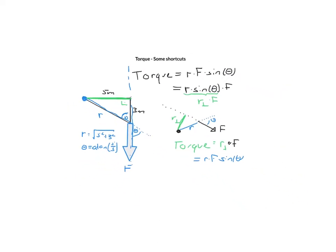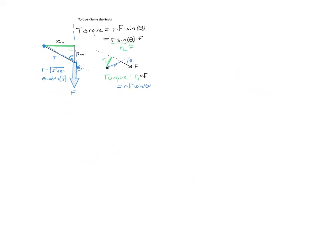Now, this is my first shortcut. There is another one that I could use. For example, again, I have a pivot point here. I have an r that's around like this, should be a straight line, and I have a force at a random angle theta.